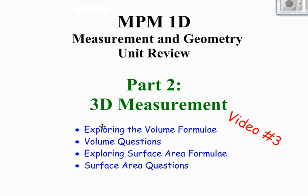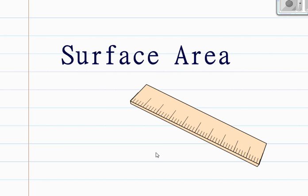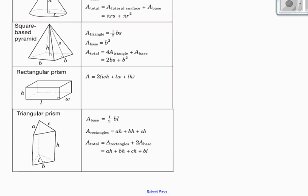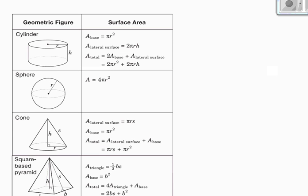In the first video we looked at the formula for volume and where they came from, and then in the second video we did some volume questions together. So in this third video we're going to start to look at surface area. On your formula sheet you have all of these formulas related to surface area. For each of the six shapes on the three-dimensional side, there's information about surface area. What's important is that you understand exactly what the information is that you're given so you know what information to use in a particular question.